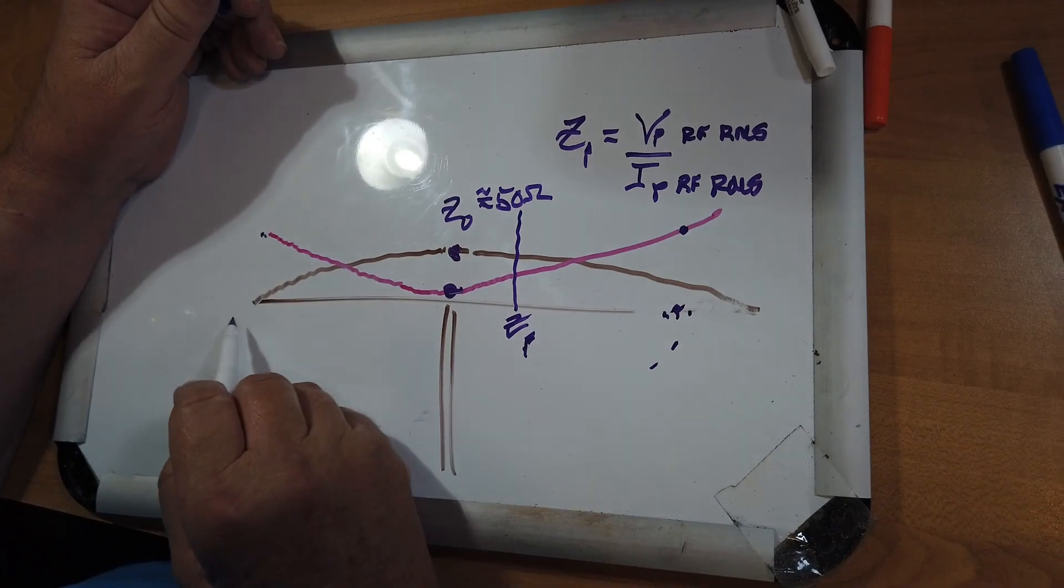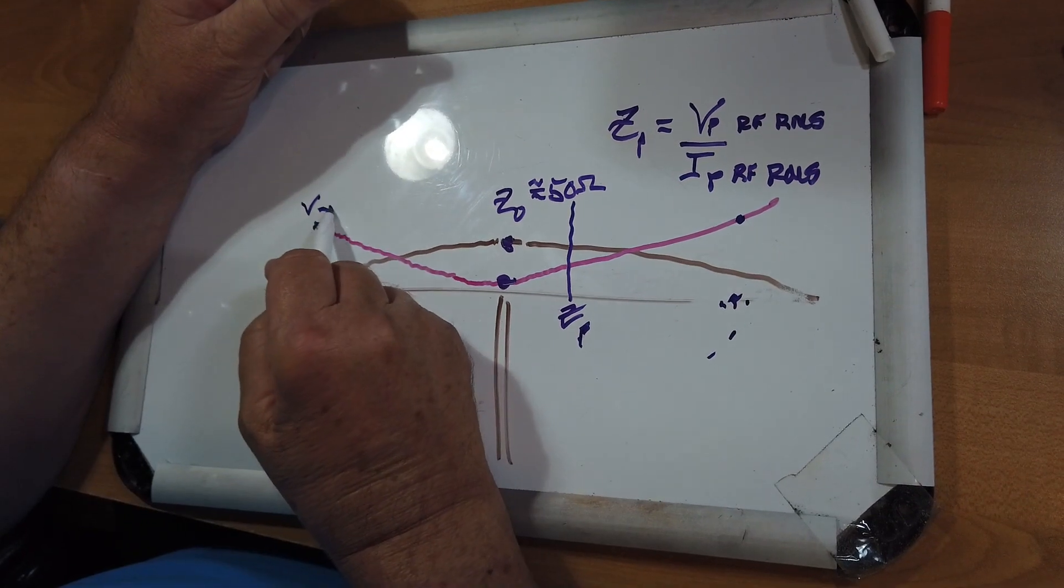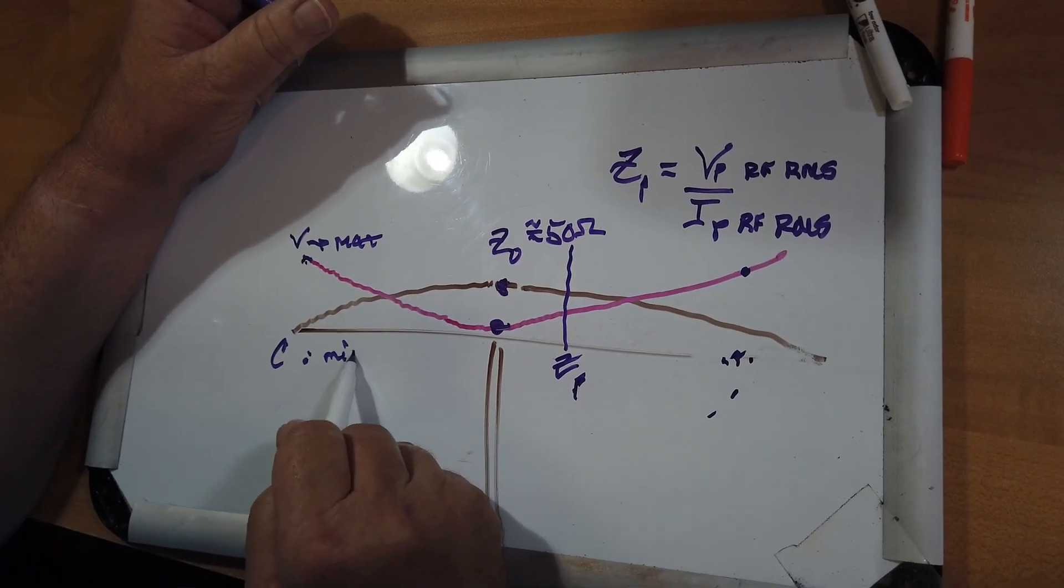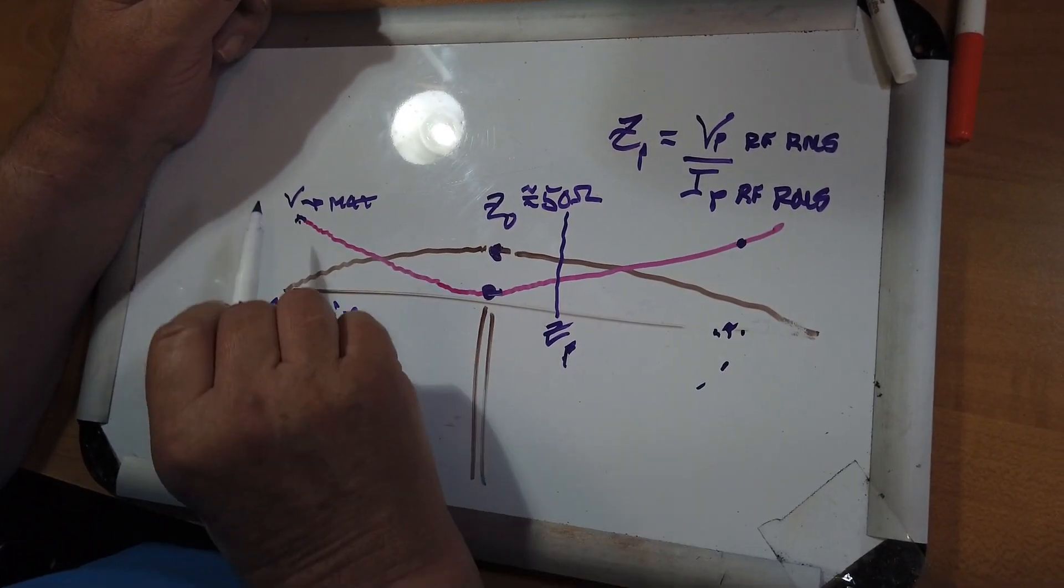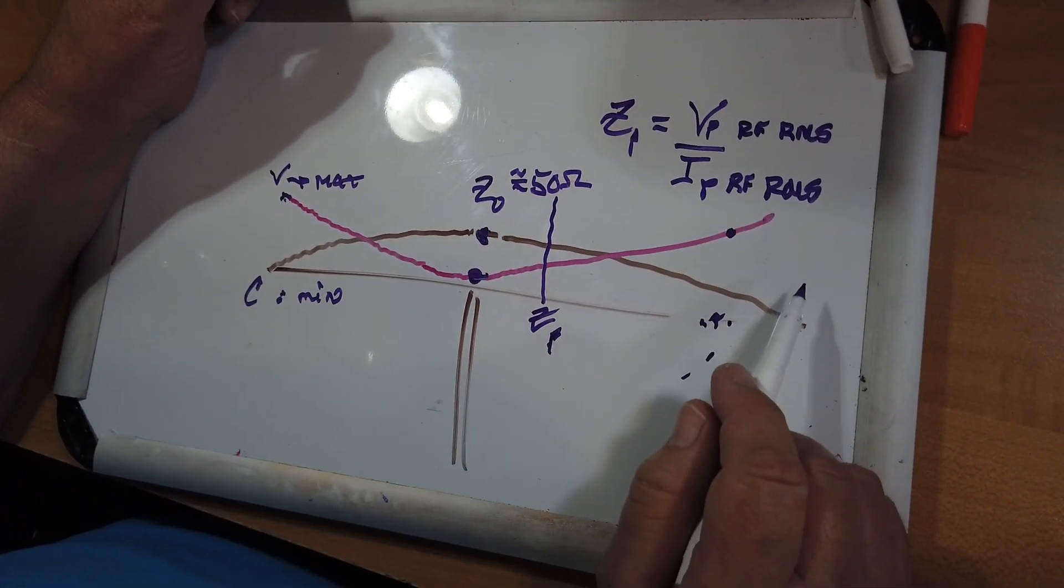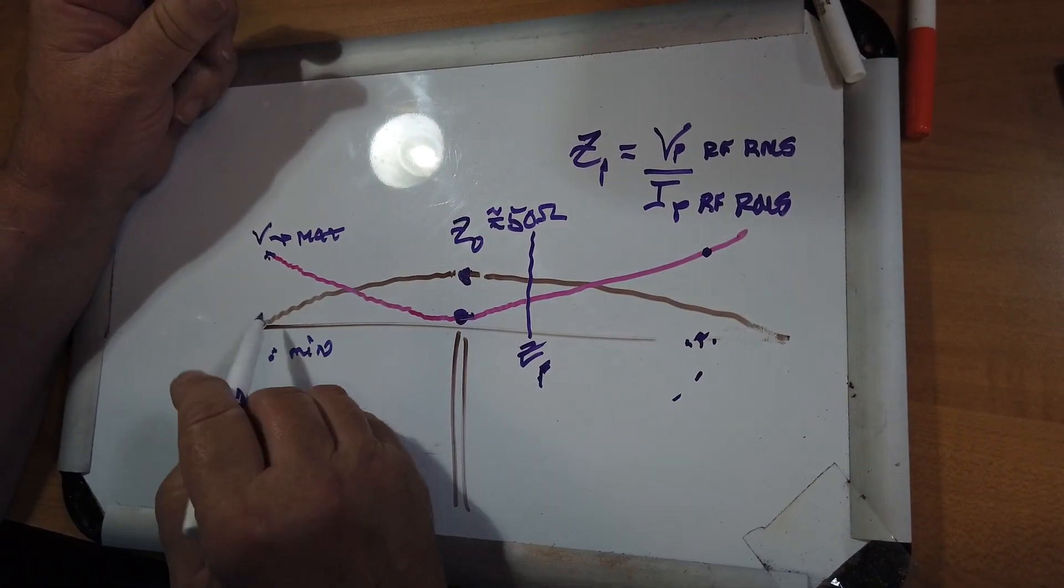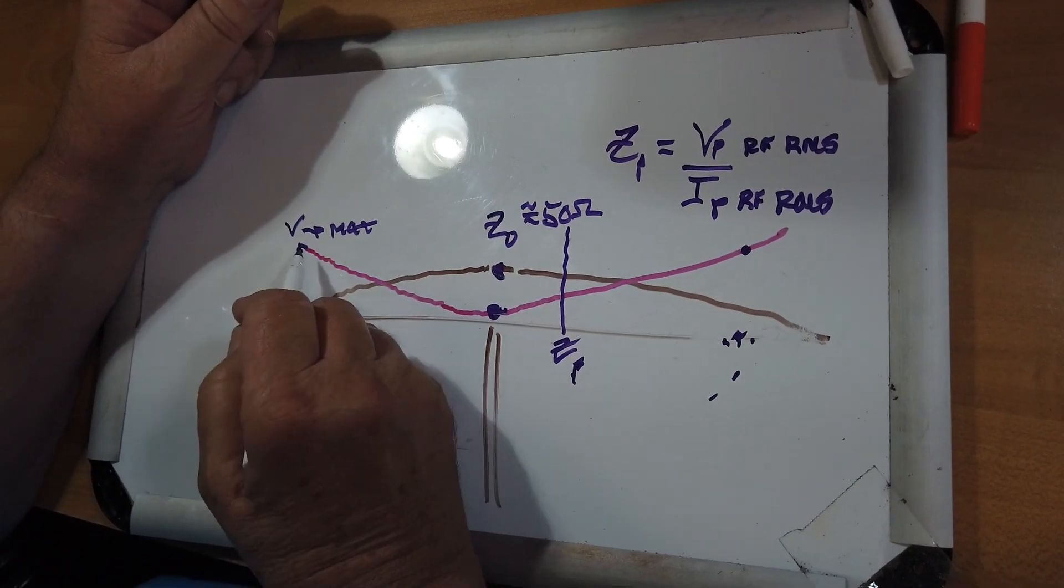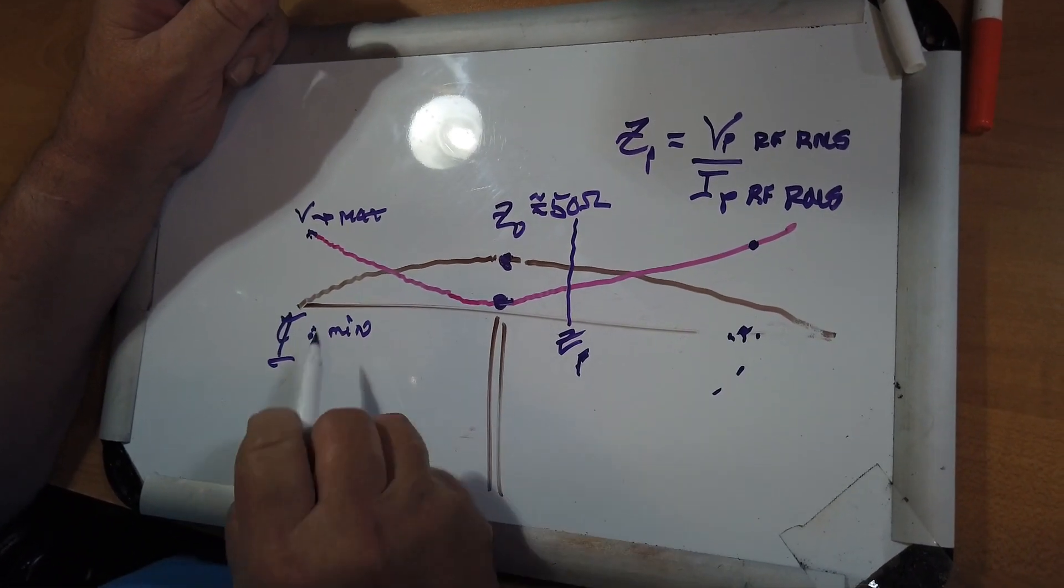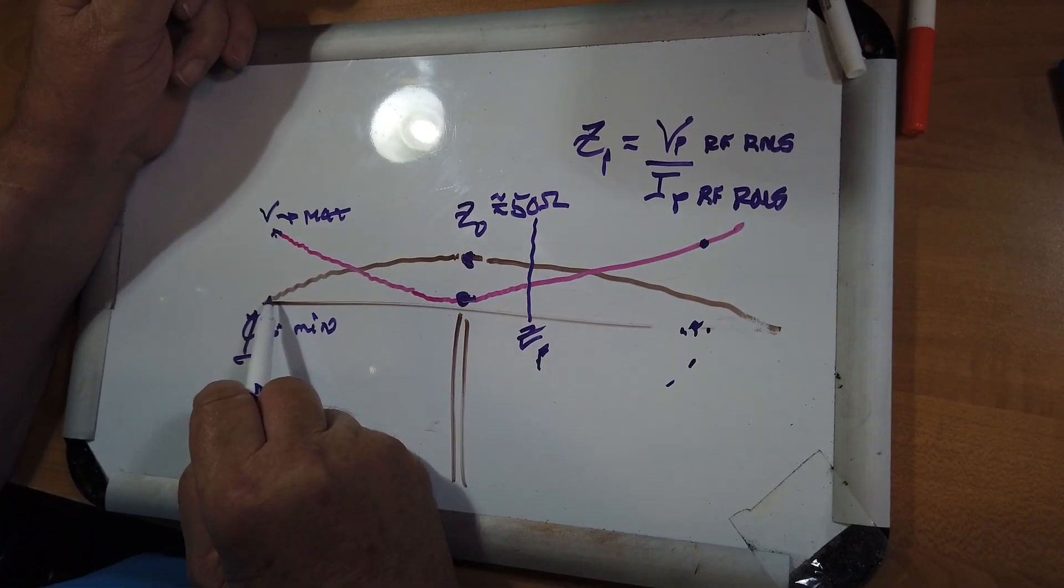Out here at the end, if you want to feed the dipole at the end, the thing to note is that the voltage is max and the current is min. Because you're actually transmitting power along the antenna, it does mean that the impedance, the voltage over the current, is at a maximum point. Now, what is that maximum point?